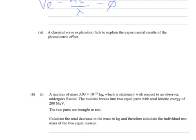Part two, this is actually just the same as for level three physics, a classical wave explanation fails to explain the experimental results of the photoelectric effect. When they say a classical wave explanation, they're talking about the difference between classical physics and modern physics. So you might sort of group it in this way, classical versus modern.